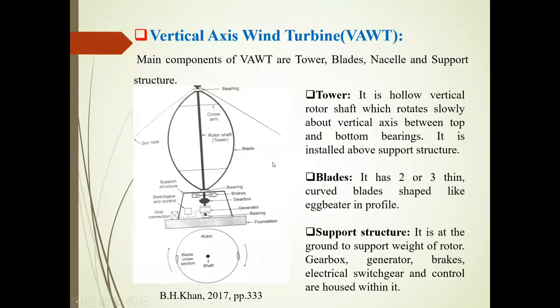Now next is the vertical axis wind turbine, VAWT. Its components are tower blades, nacelle, and support structure.